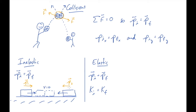So we can certainly conserve momentum in this case. But kinetic energy is a different matter. This object, before the collision, had kinetic energy — half mv squared, a positive scalar. This object also had kinetic energy — half mv squared, also a positive scalar. So before the collision there was kinetic energy in this system; it was a positive number. After the collision, these two objects are both at rest, and there's no kinetic energy anymore.